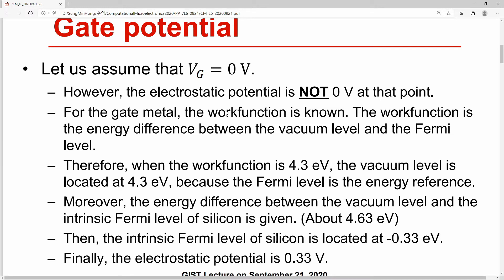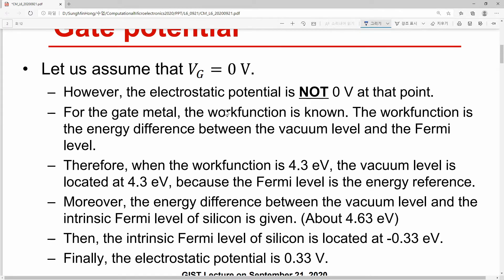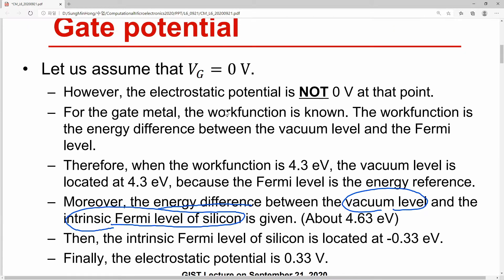Please note that the Fermi level is regarded as just 0 volt in our convention. From these two relations, we can say that the vacuum level in our notation becomes 4.3 electron volt. So with the work function, we can find out the vacuum level. However, what we actually want to know is not the vacuum level, but silicon's intrinsic Fermi level. Fortunately, the energy difference between the vacuum level and the intrinsic Fermi level of silicon is a given material parameter — about 4.63 electron volt.